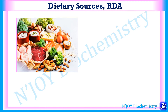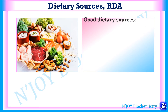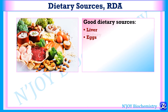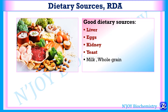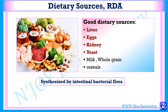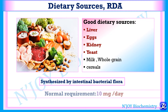Coming to the dietary sources and RDA of pantothenic acid: good dietary sources include liver, eggs, kidney, yeast, milk, whole grain, and cereals. It can also be synthesized by intestinal bacterial flora. The normal daily requirement of pantothenic acid is 10 milligrams per day.